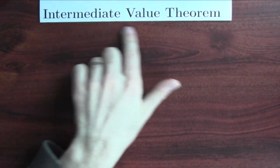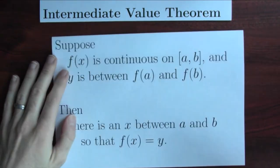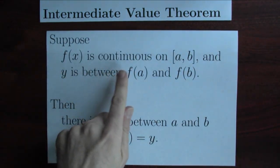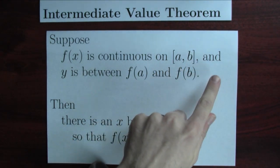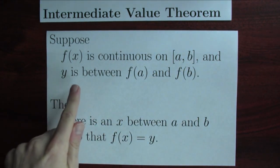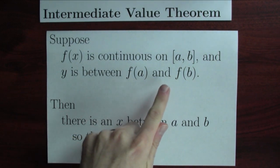So here's a statement of the intermediate value theorem. The theorem says the following. Suppose f of x is continuous on the closed interval between a and b, and that y is some point between f of a and f of b.